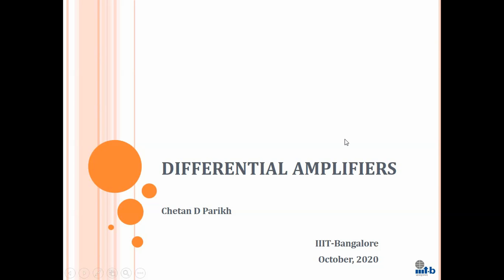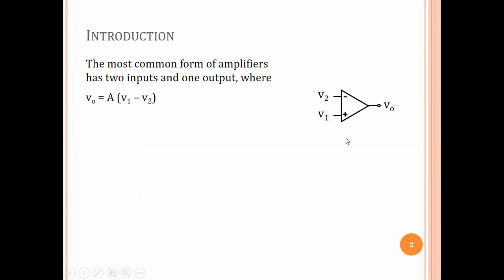Let's start the chapter on differential amplifiers, which is chapter 4 in Razavi's book. As you know, the most common form of amplifiers that we encounter in the world has two inputs and one output. That is the op-amp, and the output is given by some voltage gain A times the difference between the two inputs, V1 and V2. There is actually another class of amplifiers which have a differential output also, but in this course we will not study that configuration.